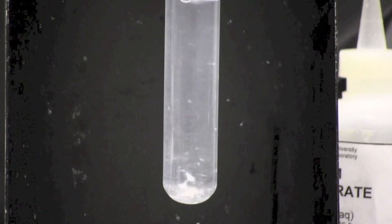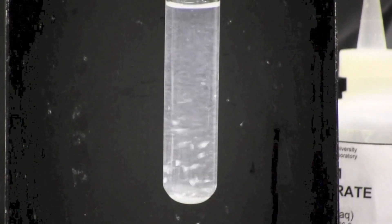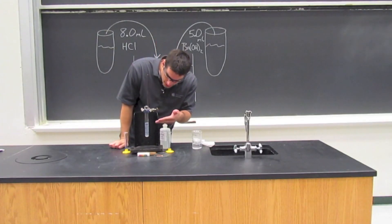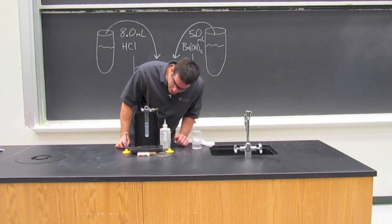As you can see in this tube, a white precipitate is going to form. If we centrifuge this out, it would fall to the bottom of the test tube.